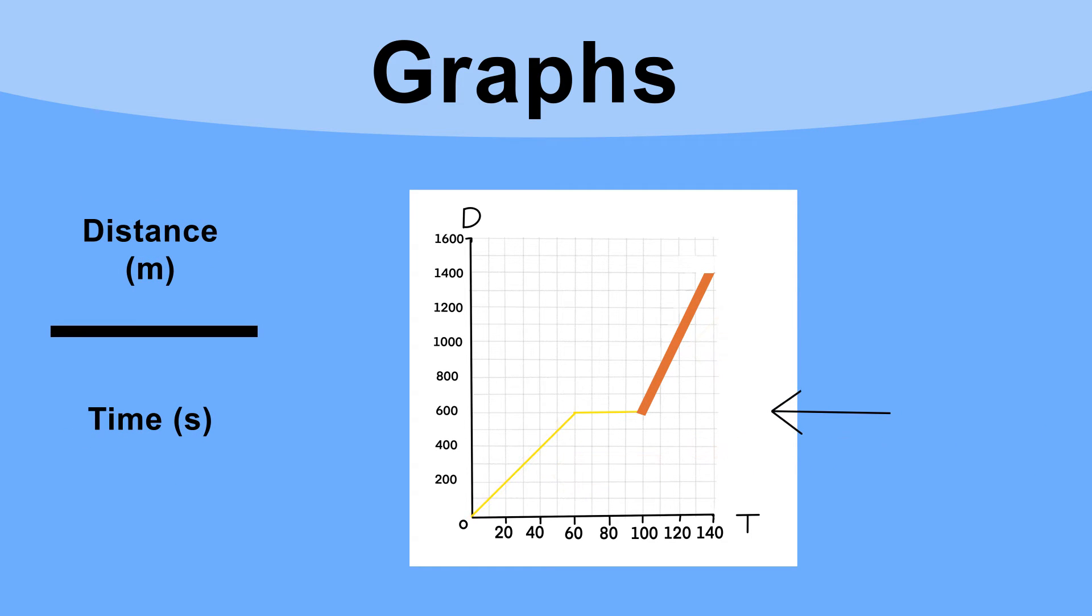If we look at the speed of the car after it stops at the lights, we can see the distance increases from 600 meters up to 1400 meters. This tells us he traveled 800 meters in that time. Well, what was the time? It was 100 seconds when he started and 140 seconds when they finished, so it's taken 140 minus 100, or 40 seconds.